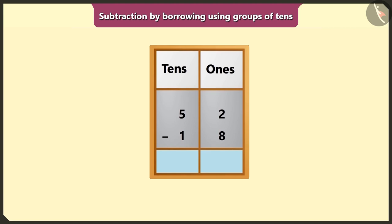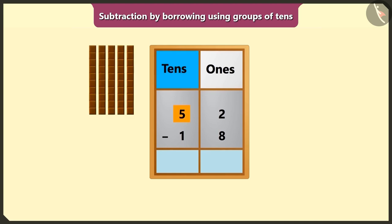You had 52 chocolates, which means 5 tens and 2 ones chocolates. We ate 18, means 1 tens and 8 ones chocolates of them. So here we have to perform 52 minus 18.